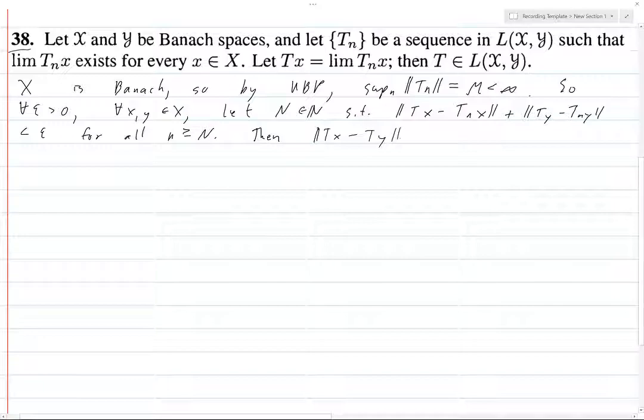So then what? Then norm of tx minus ty is certainly less than or equal to, we do a typical triangle inequality thing. I'm going to take this, and we've got tnx minus tny. So we've basically introduced tnx and tny. That should be a ty.